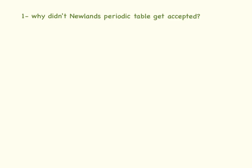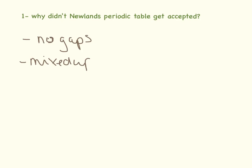So first of all, why didn't Newlands' periodic table get accepted? Because there were no gaps in it. He assumed that everything that was going to be discovered had been discovered. It was a bit mixed up, so things that had different properties were in the same groups as each other, and he had metals and non-metals together.